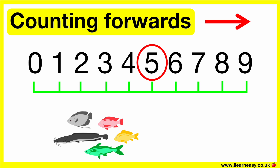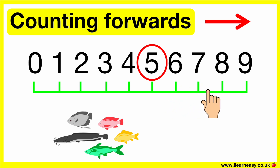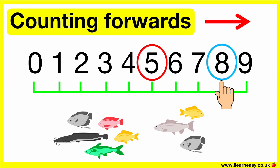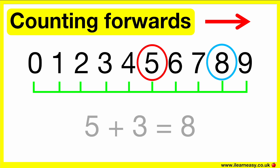Lucy has five fish in her fish tank. She adds three more. How many fish does Lucy have? Start at five because there are five fish, and add on three more. Six, seven, eight. So, she has eight fish. One, two, three, four, five, six, seven, eight. Five plus three equals eight.